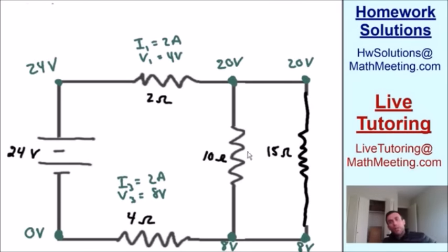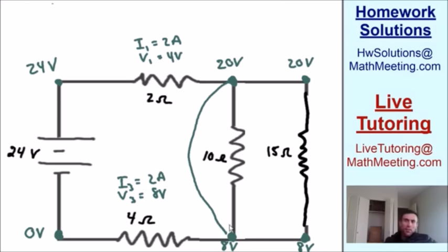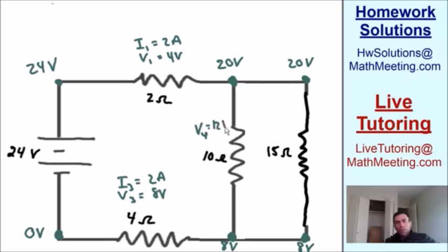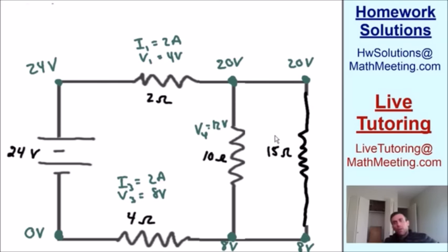Before crossing the parallel resistors, the voltage is 20 volts; after, it's 8 volts — a difference of 12. So the voltage across resistor 4 is 12 volts, and similarly, the voltage across resistor 5 is also 12 volts.